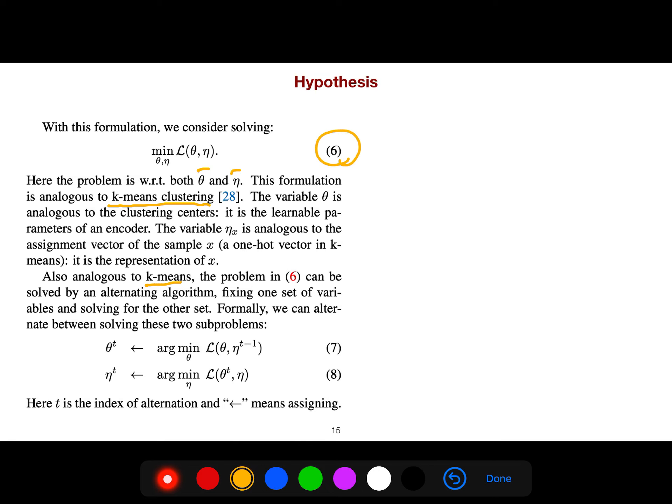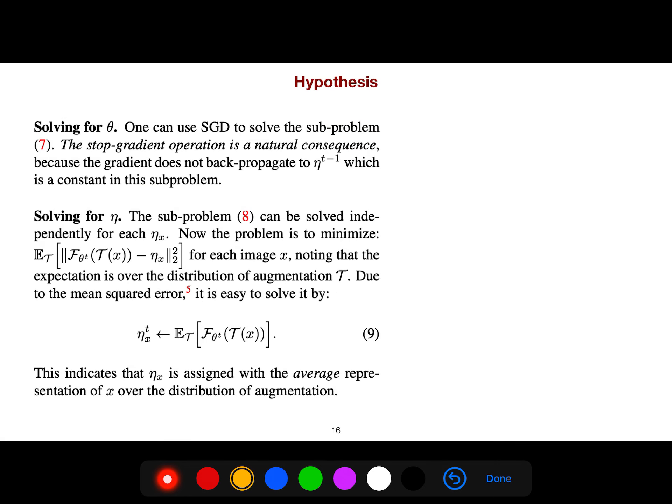Also analogous to k-means, this problem can be solved by an alternating algorithm, fixing one set of variables and solving for the other set. Formally, we can alternate between solving these two sub-problems. One can use stochastic SGD to solve the sub-problem. Then the stop-gradient operation is a natural consequence. And then we solve for η. The sub-problem can be solved independently for each η.